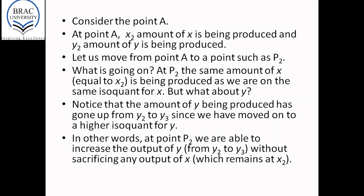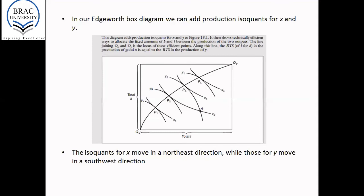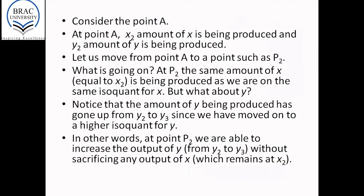Consider the point A. At point A, what do we notice? An amount of X2 is being produced, an amount of Y2 is being produced. So keep that in mind. At point A, X2 amount of X is being produced, and Y2 amount of Y is being produced.